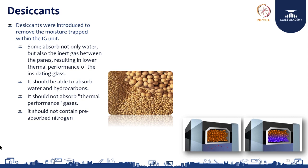Finalizing the vendor is the prime job for us. The desiccant should be able to absorb water and hydrocarbons — that is its natural job. But it should not absorb the thermal performance gases, which include argon, xenon, and krypton. It should also not contain pre-absorbed nitrogen. If nitrogen is already pre-absorbed, thermal performance will be very low and the durability of the desiccant will be very low. These are the factors you need to consider when selecting a desiccant and finalizing the vendor.